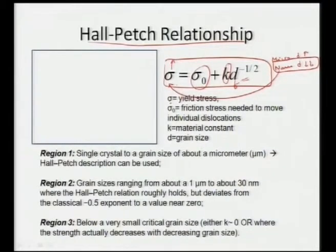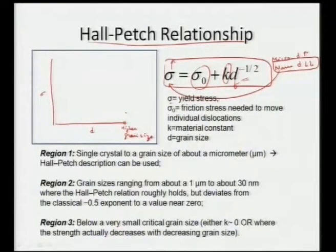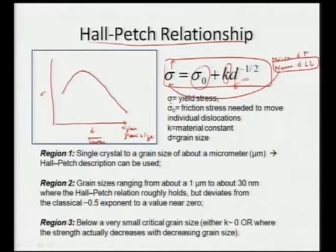That is why people are now moving towards manufacturing bulk nanostructured materials. In this relationship, though it is a continuous relationship, we can see that as we go for a lower grain size our yield stress starts increasing, but after a certain point what happens is that it starts decreasing at that certain point as well.